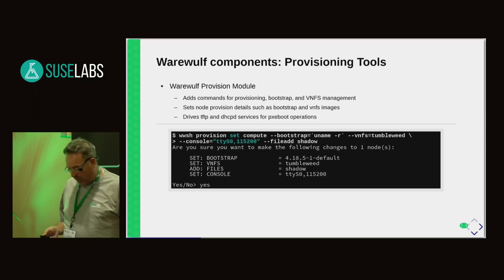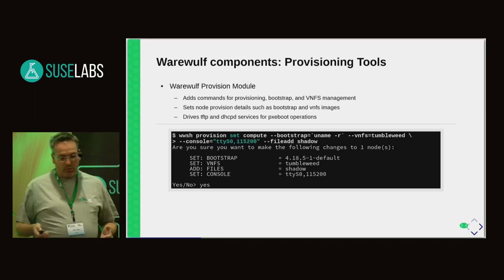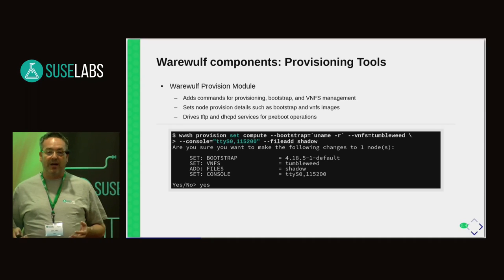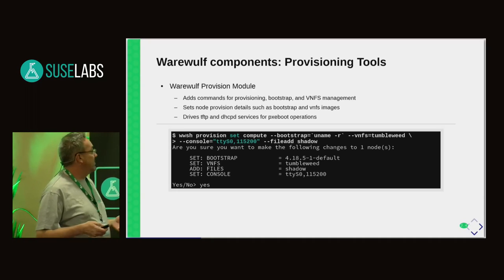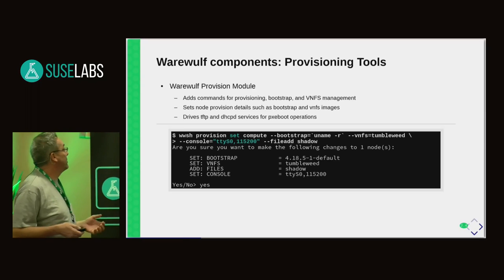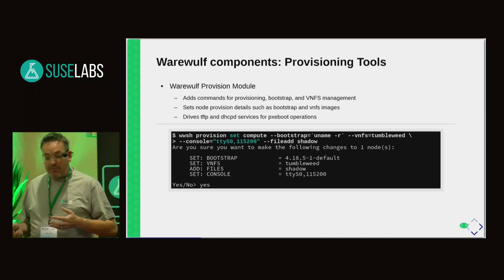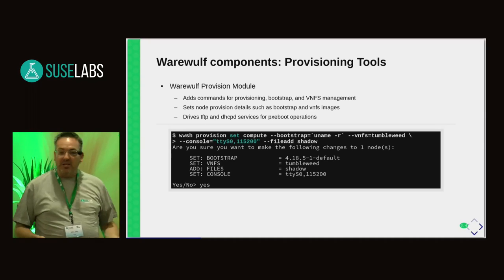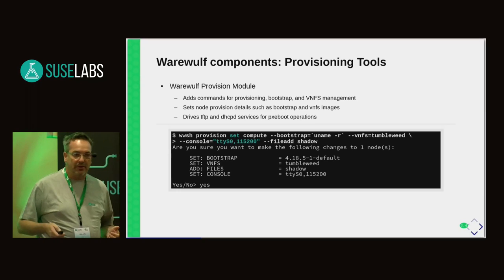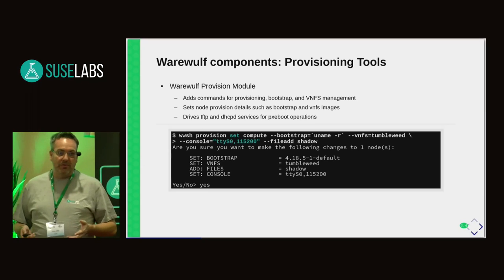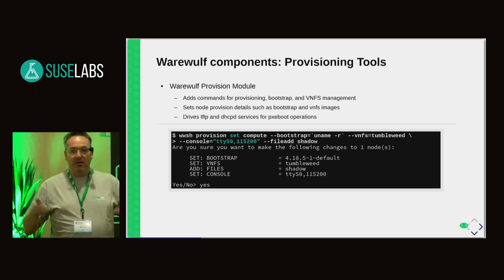The provision module is probably where most of the work happens within Werewolf. The provision system assigns to the various nodes resources that will allow each node to accomplish what it needs to — things such as a bootstrap, a file system, etc. To perform this, the provision module actually manages an Apache server, a DHCPD server, and a TFTP server to take care of the entire PXE boot landscape for the cluster. When you make a change within the master node, all those changes get propagated to the correct service and the magic happens.